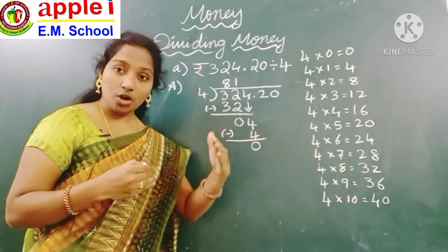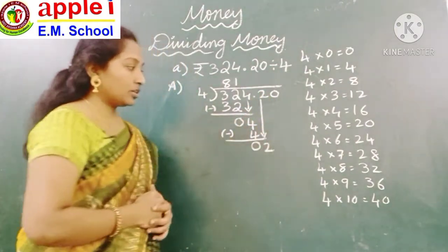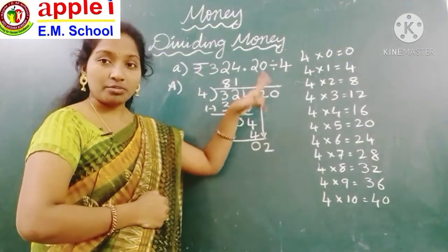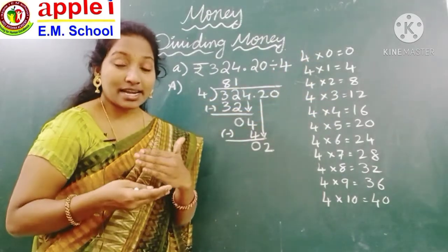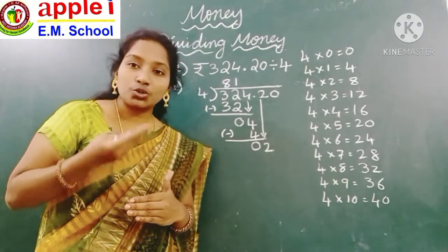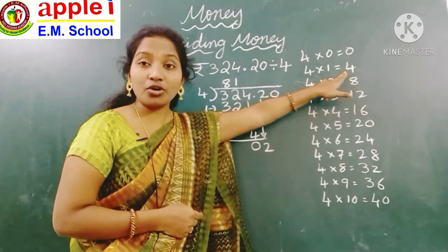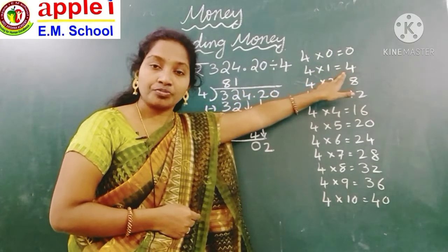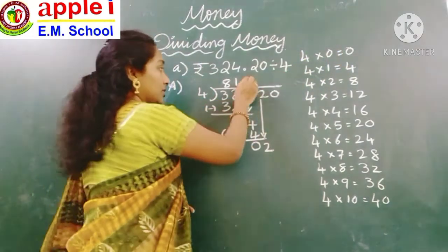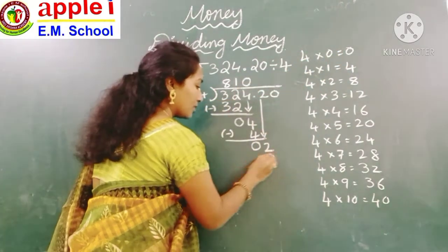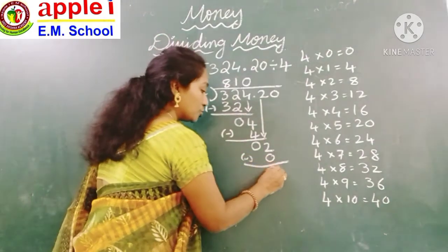Next bring down the next digit: 2. Check whether 2 will come in the 4 times table — no. So take the smallest number nearest to 2. 4 ones are 4, which is greater than 2, so take the number above: 4 zeros are 0. Do the subtraction: 2 minus 0 is 2.